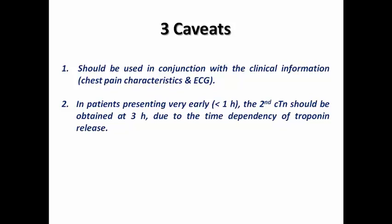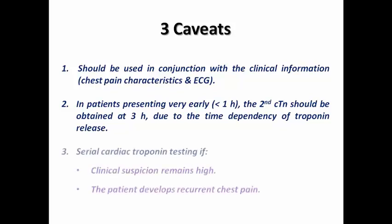In patients presenting very early — less than 1 hour from the onset of chest pain — the second troponin should be obtained at a 3-hour interval due to the time dependency of troponin release, to decide whether the patient can be discharged or not. Serial troponin testing is necessary if clinical suspicion is still high or the patient develops recurrent chest pain, so I don't discharge a patient based on just one set of normal troponin.